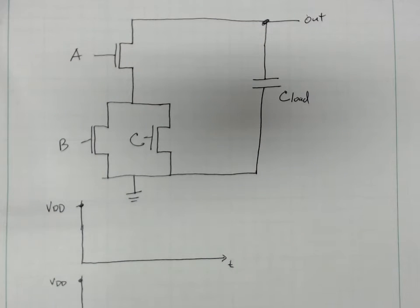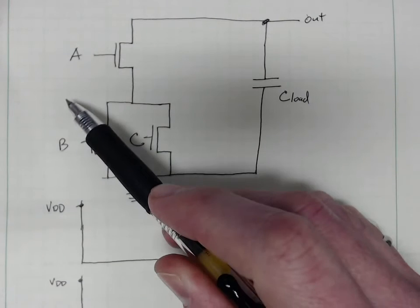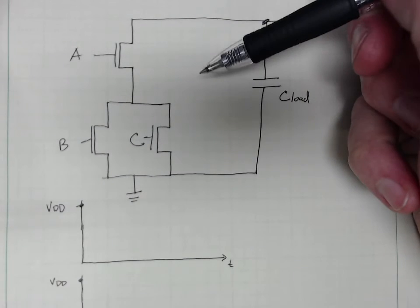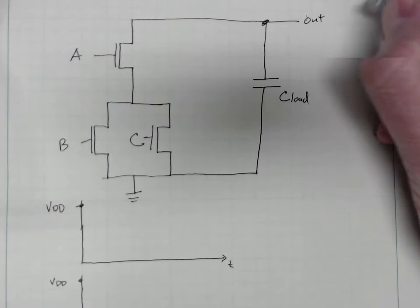Let's take a quick look at what happens when we have a rising transition on our inputs here. This is just the pull-down network. At our previous time, our output voltage starts out at high.